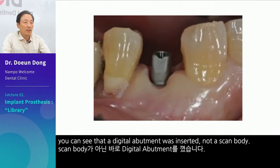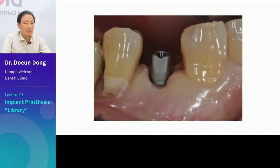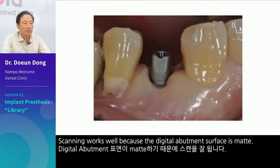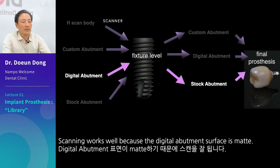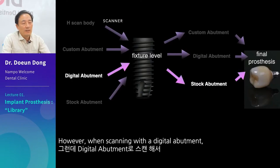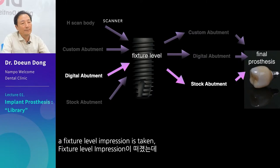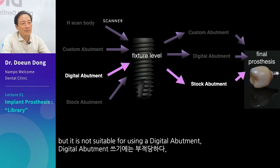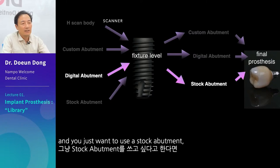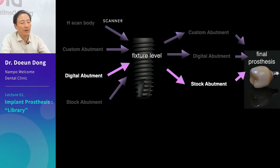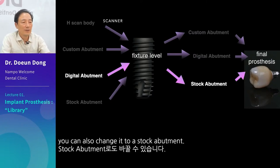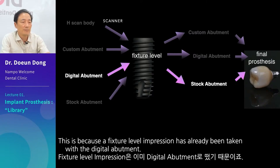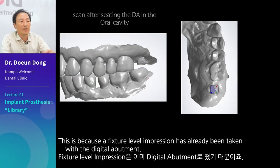If you look at the picture, you can see that a digital abutment was inserted, not a scan body. Scanning works well because the digital abutment surface is matte. However, when scanning with a digital abutment, a fixture level impression is taken, but it is not suitable for using a digital abutment if you just want to use a stock abutment. You can also change it to a stock abutment because a fixture level impression has already been taken with the digital abutment.